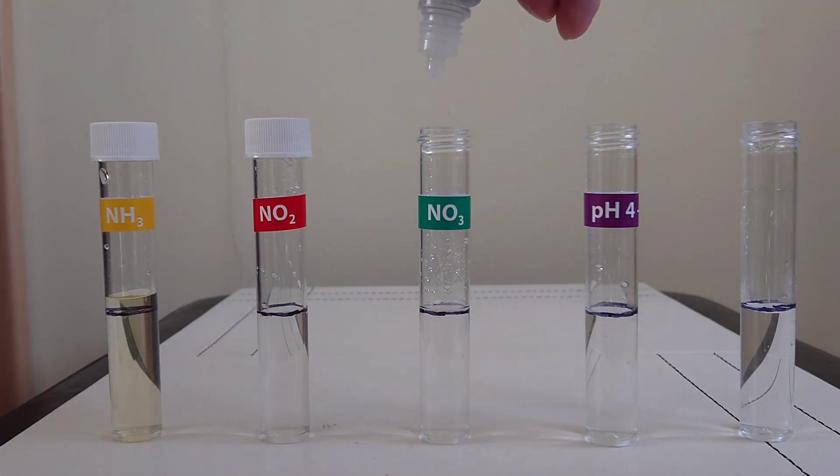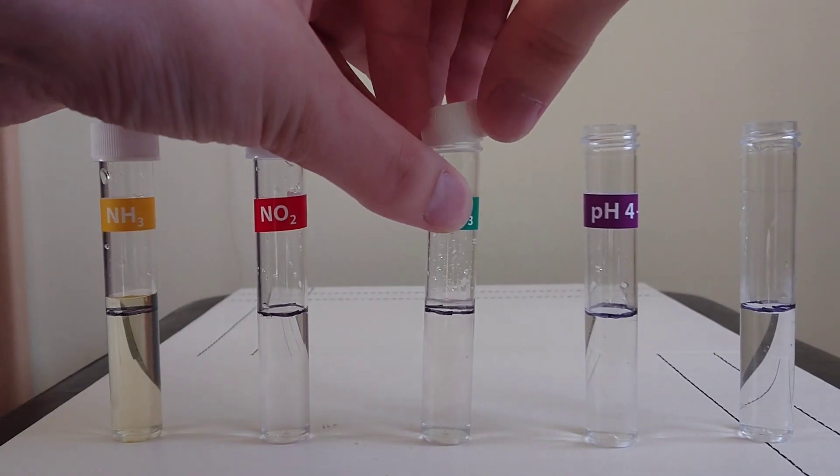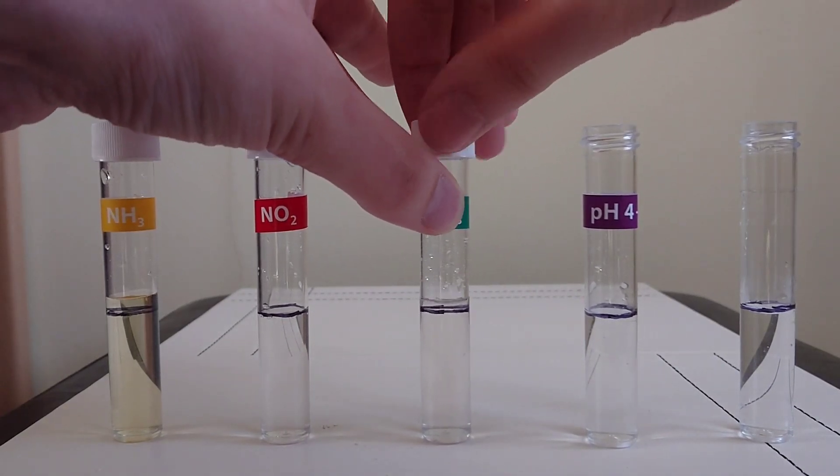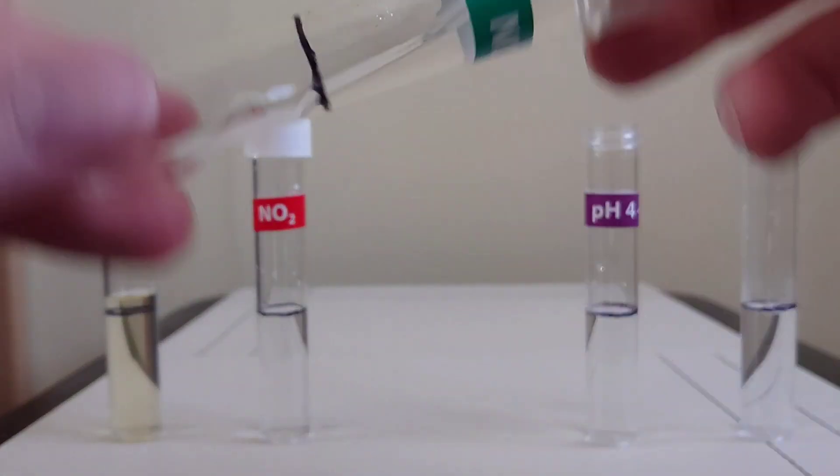So there's test bottle number one, adding six drops, and six from bottle two. Cap the tube, give it a mix.